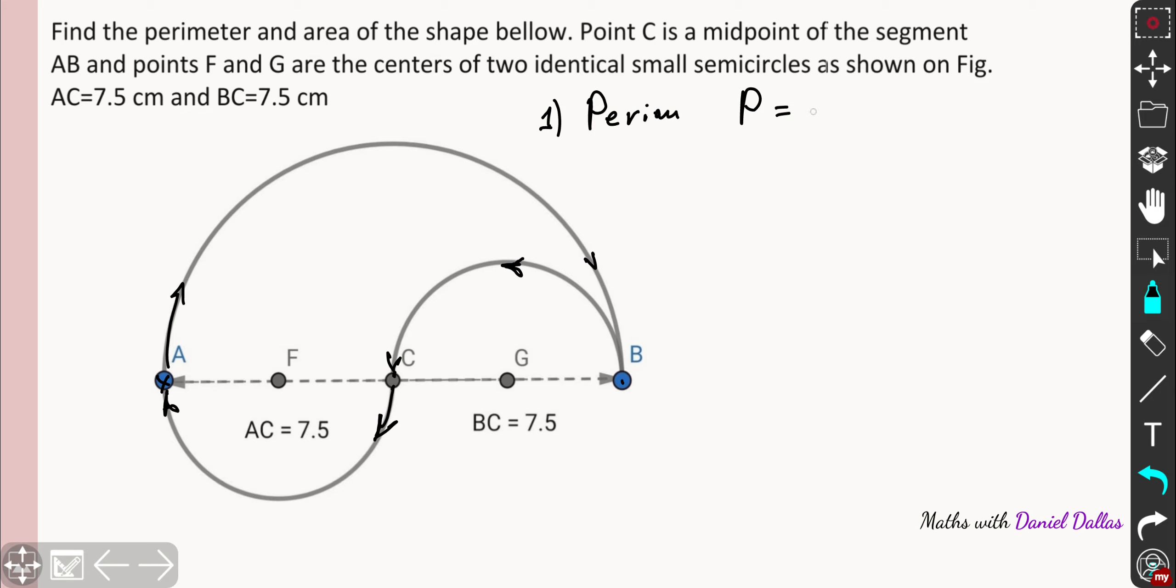So that's why basically perimeter consists of perimeter, a big semicircle, from point A to point B in a clockwise direction and also of two identical perimeters of small semicircles. Alright, so I'll put it just like that.